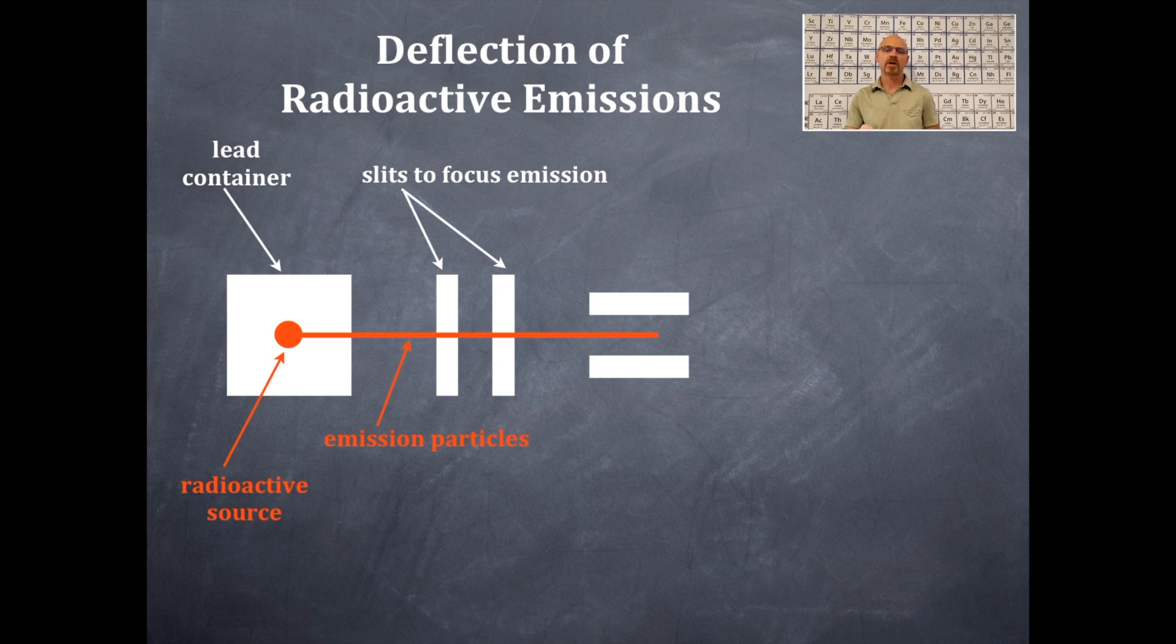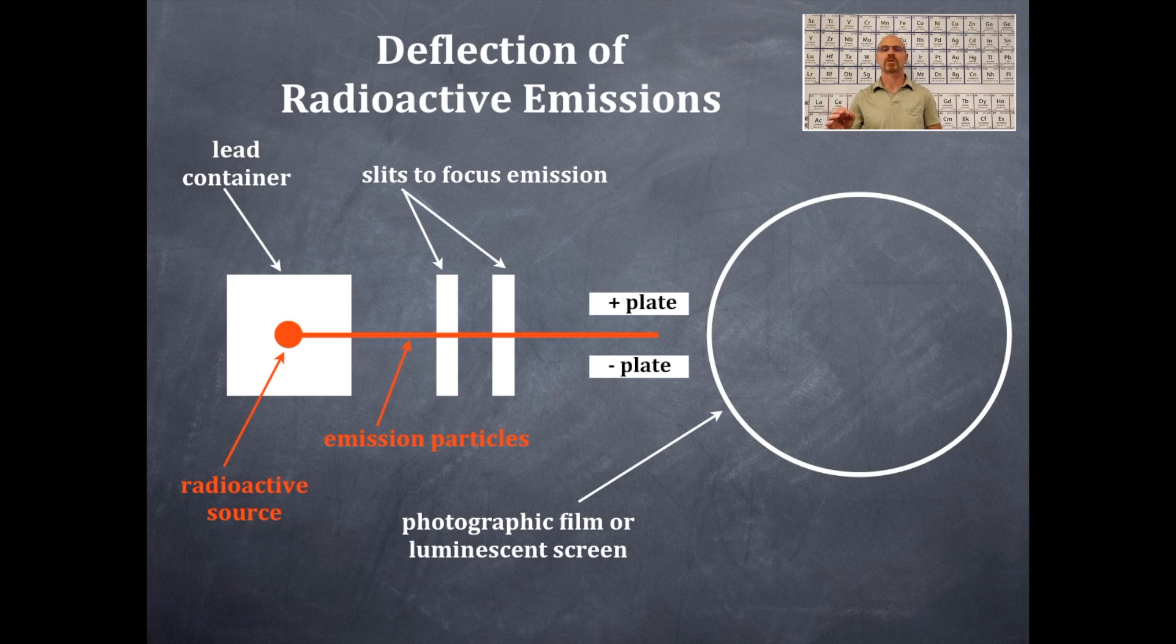So that emission of particles will follow a linear path. While it follows that linear path, it's going to go through two plates, i.e., magnets. One plate is positive, the other plate is negative. And then we somehow need to detect our radioactive emission of some kind. And that's what we're going to use here is a photographic film or a luminescent screen.